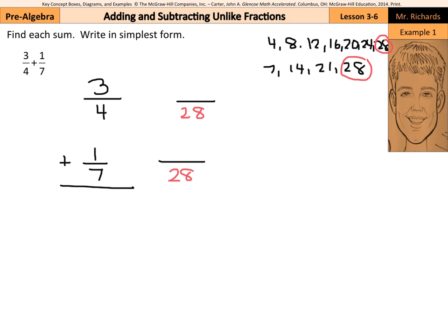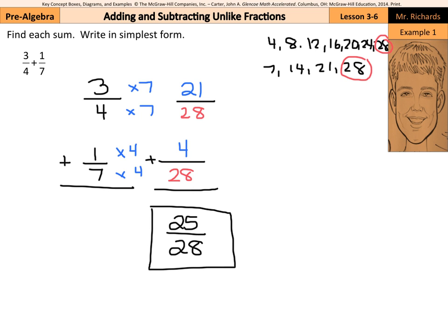Now, 4 times 7 was 28, and 3 times 7 is going to be 21. 7 times 4 was equal to 28, and 1 times 4 is going to be equal to 4. And now we're adding 21 28ths to 4 28ths. 21 plus 4 is 25, and we're keeping the common denominator of 28. This cannot be simplified any further, so 25 28ths is our solution.